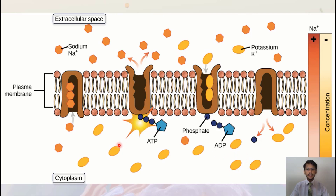Similarly, sodium ions present inside the cell enter the sodium-potassium pump and the opening is closed. In the next step, an ATP molecule provides a phosphate group, the opening opens, and all sodium ions are released to the outside. In this way, sodium ions are more on the outer side of the cell and potassium ions are more on the inner side. This maintenance of sodium and potassium ion concentration is done through active transport.